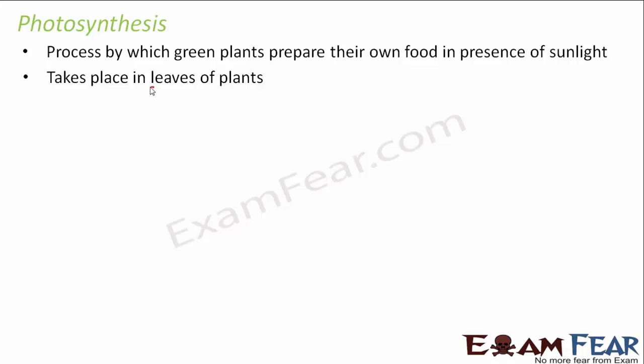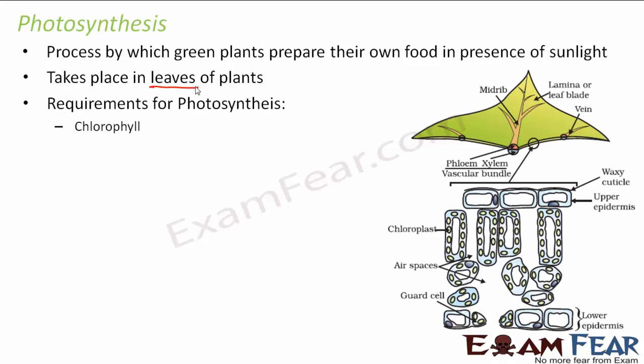So where does photosynthesis take place? It takes place in the leaves of plants. This process of preparing food happens in the leaves and the food which is prepared is also stored in the leaves. The very first requirement is chlorophyll. Chlorophyll is a green colored pigment which is present inside a cell organelle called chloroplast. While studying the lesson on cell in class 9, we talked about plant cell and animal cell. Inside the plant cell we had a cell organelle called chloroplast — that kind of plastid which is green in color.